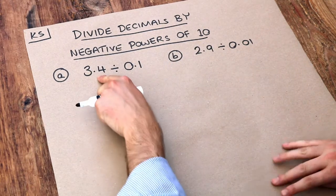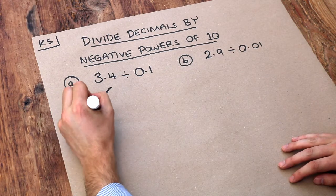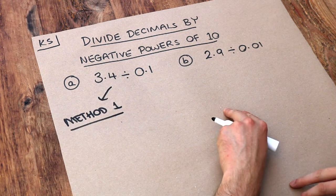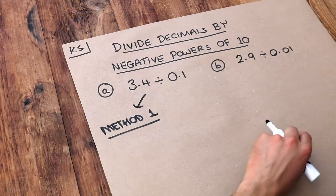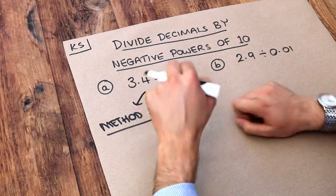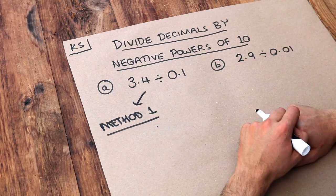Now we've first got 3.4 divided by 0.1. I have two different methods of doing this and you just pick whichever method you prefer. One way is to do what we usually do when we divide two numbers involving decimals, and that's to basically multiply both numbers by 10 until this right number is no longer a decimal, it's a whole number.